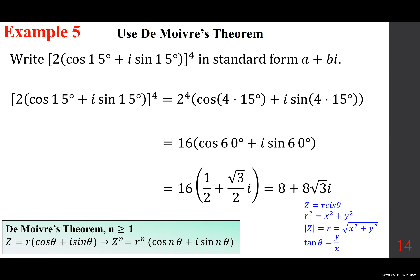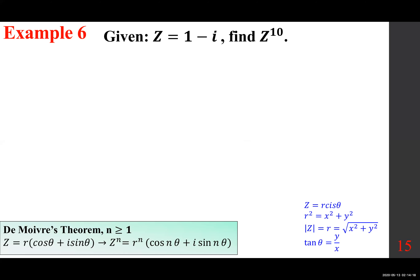Here's the next one: Z equals 1 minus i, we want to find Z to the power of 10. The way it's given it's very difficult — 1 minus i to the power of 10 requires the binomial theorem and takes forever. Instead, we are going to rewrite this first in the form Z = R cis theta — putting it in polar form.